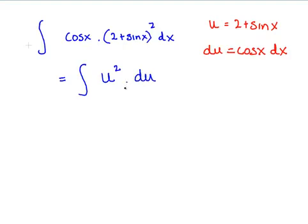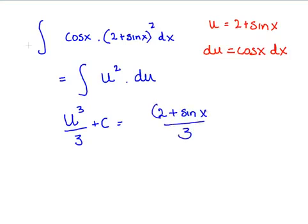So we have accounted for all of the terms. The answer to that is u cubed over 3, very simple enough expression. That equals, plus C because we have written it as an indefinite integral, that equals (2 plus sin(x)) cubed over 3.